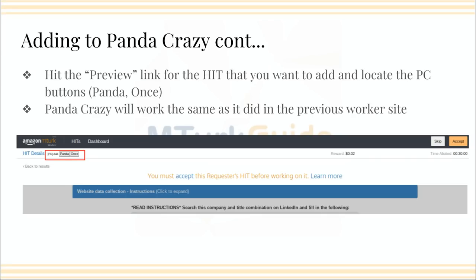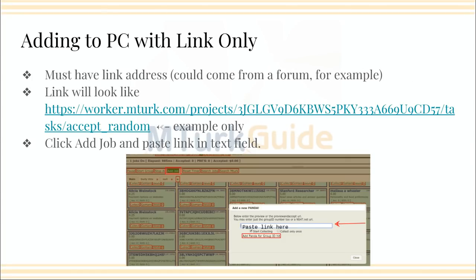You can also hit the preview link from the main page, which gets you into the HIT before you've accepted it — you're just previewing it and taking a peek. You'll also see up in the left-hand corner the Panda or Once options. For the most part, that works as it previously did; it just looks a little bit different, which is a little disconcerting for some folks.